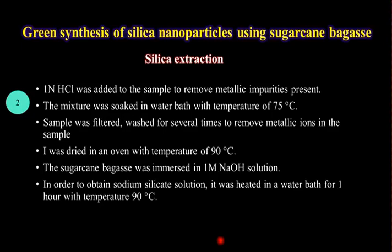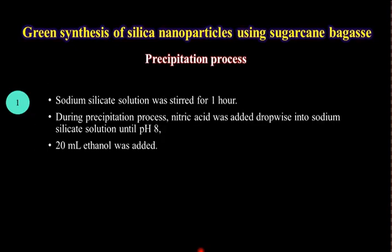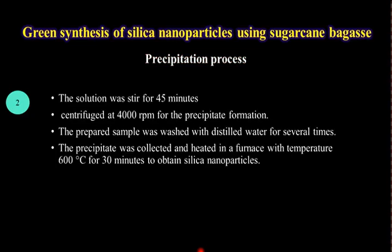In order to obtain a sodium silica solution, it was heated in a water bath for one hour at a temperature of 90 degrees centigrade. The next step is the precipitation process. The sodium silica solution was stirred vigorously for one hour. During precipitation, nitric acid was added dropwise into the sodium silica solution until the pH value of the solution reached 8. Then 20 milliliters of ethanol was added. The solution was continuously stirred for 45 minutes and centrifuged at 4000 rpm for precipitate formation.